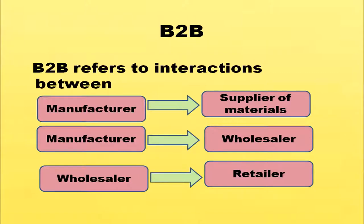In B-to-B, interaction takes place between one business unit and another. It can be between a manufacturer and supplier of goods, manufacturer and wholesaler, or wholesaler and retailer. Wholesaler is a business unit, and retailer is another business unit. Interactions between wholesalers and retailers, manufacturers and wholesalers, and manufacturers and suppliers can all be included under B-to-B, that is business to business commerce.